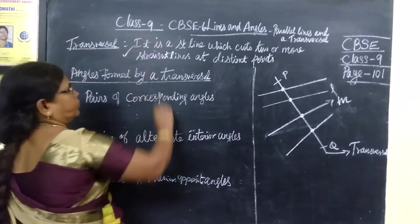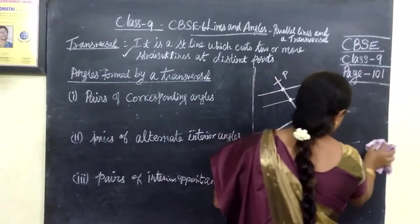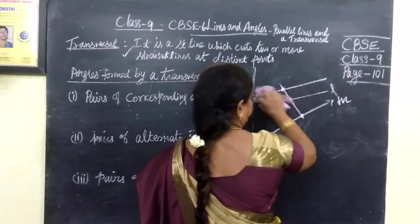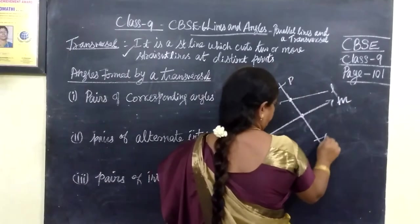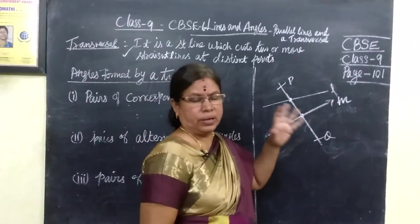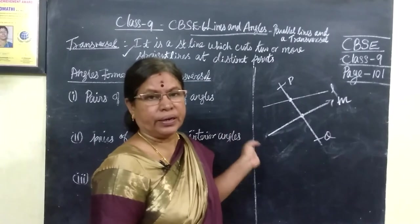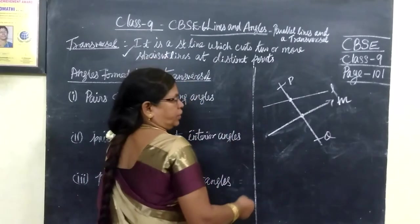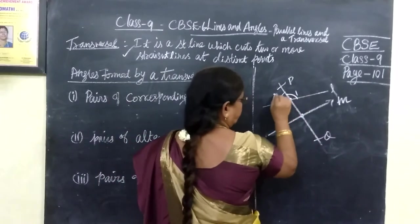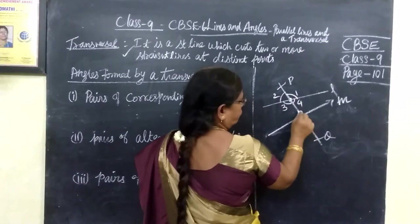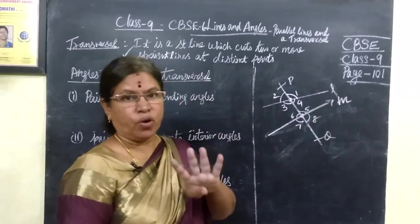This is the definition of transversal. When a transversal cuts in such a way, we get angles formed by the transversal with the straight lines. We consider only two lines now. PQ forms some angles and we give names: corresponding angle, alternate interior angle, and interior opposite angle. Here 8 angles we are getting — 1, 2, 3, 4, 5, 6, 7, 8 — so 8 angles, that is 4 pairs.